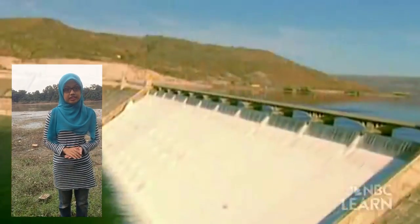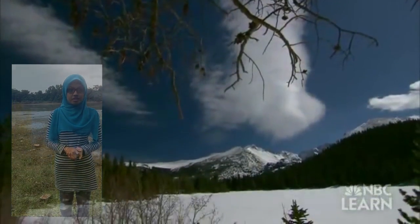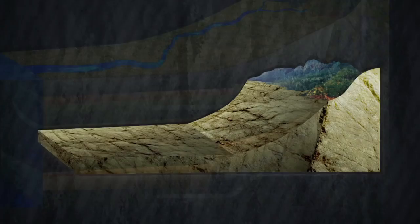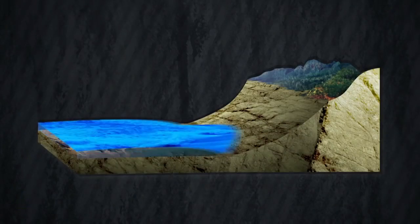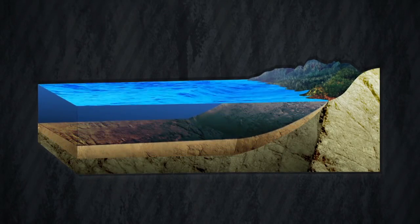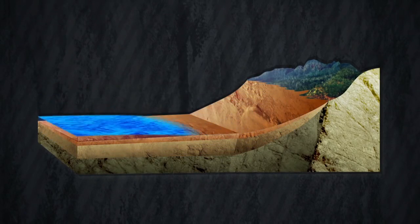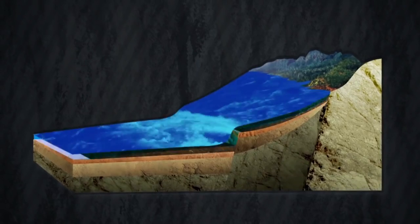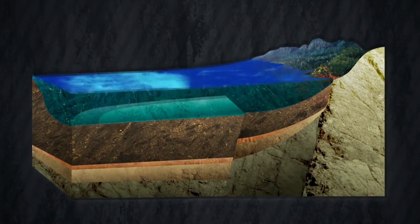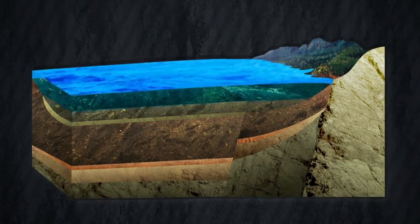Surface water is water that can be found on the surface of the planet. Ground water is the water that is present beneath the Earth's surface. And rain water is the water that undergoes the process of condensation from the atmosphere and is further precipitated into the form of droplets. All forms of water in this world are fundamentally connected to each other in the cycle called the hydrological cycle.